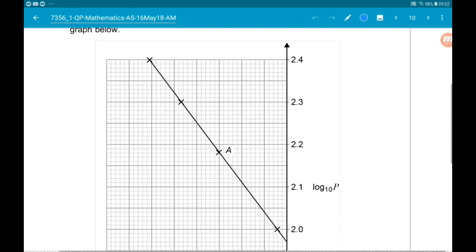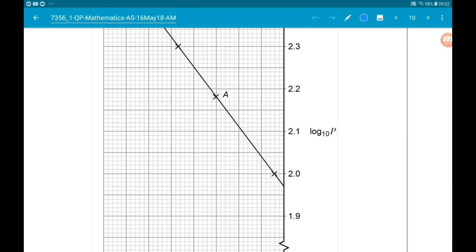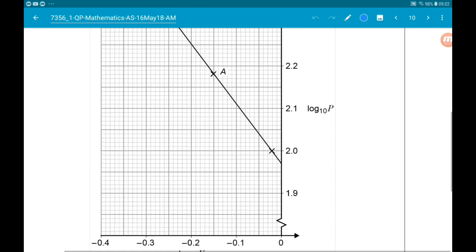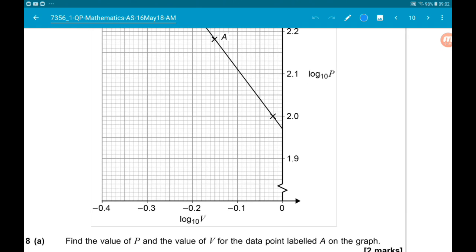So there's a graph. We've got log base 10 of P coming up the side and log base 10 of V going along the bottom.